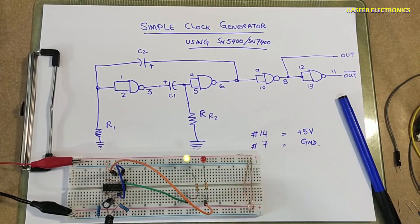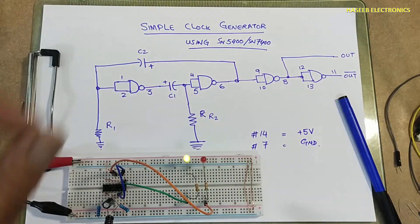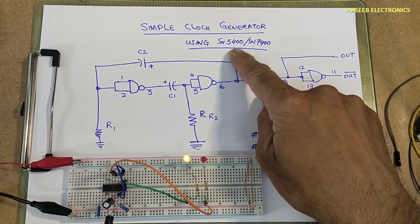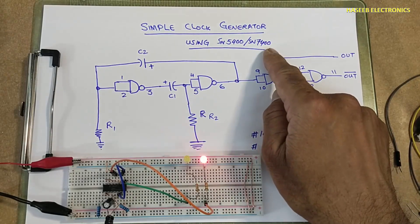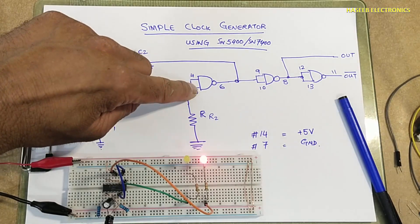We are using two electrolyte capacitors, two resistors, and one IC 5400 or 7400. Pin 1 and 2 connected together, 4 and 5 connected together, 9 and 10 together, 12 and 13 together.